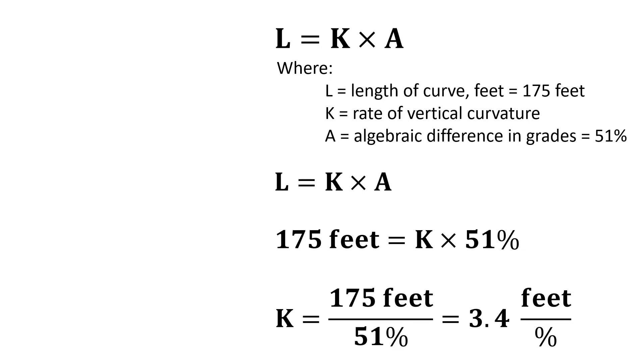So what this is telling us is that we have this huge change in slopes and we have to change a 1% level every 3.4 feet. So over that kind of short distance, 175 feet, every 3.4 feet, we're helping make that transition between those two steep grades.